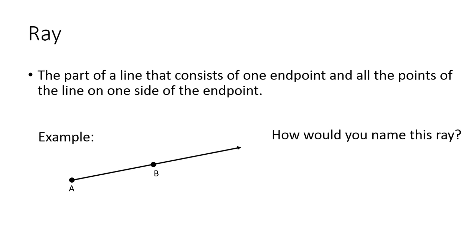Next, we have a ray. A ray is the part of a line that consists of one endpoint. So we have one endpoint on a ray and all the points of the line on one side of the endpoint. So the other side of the ray goes on forever. So how would you name this ray? You have to start with the endpoint. That's critical.